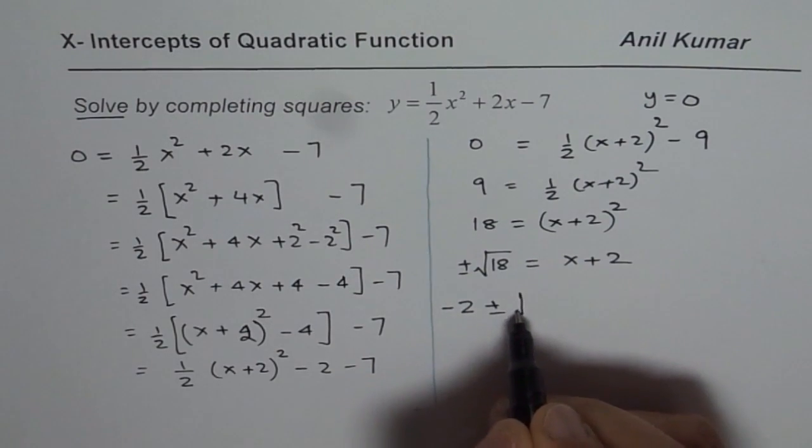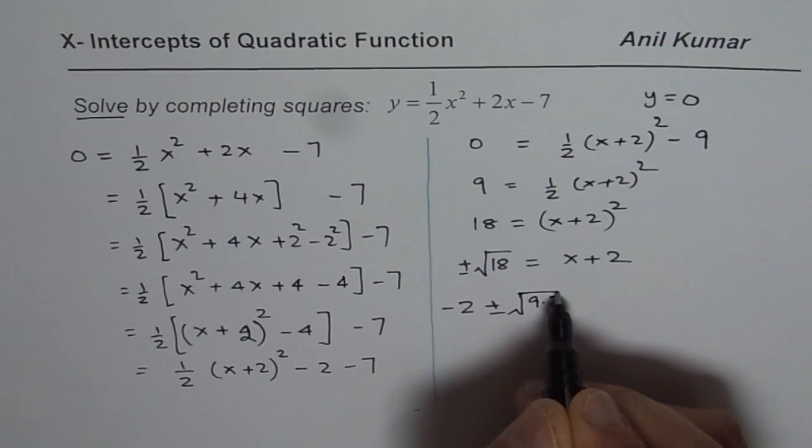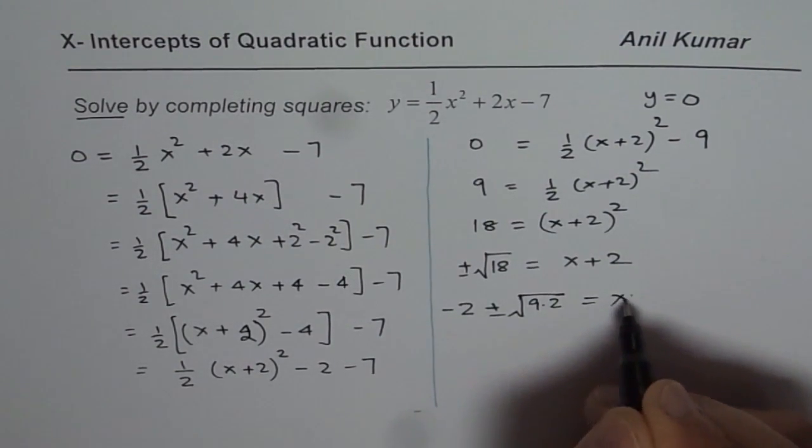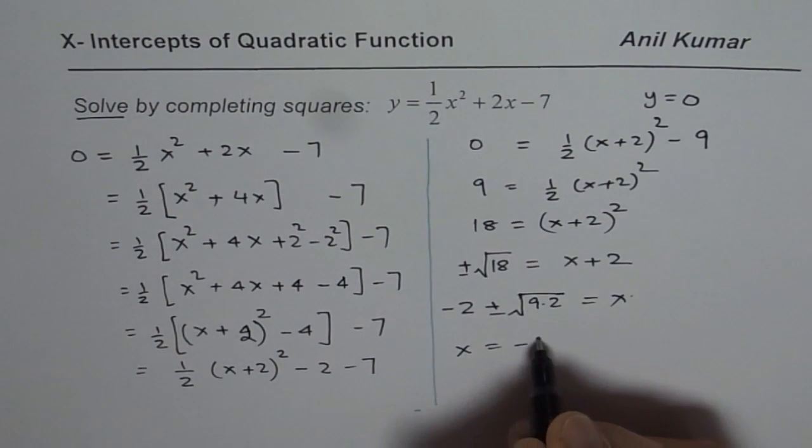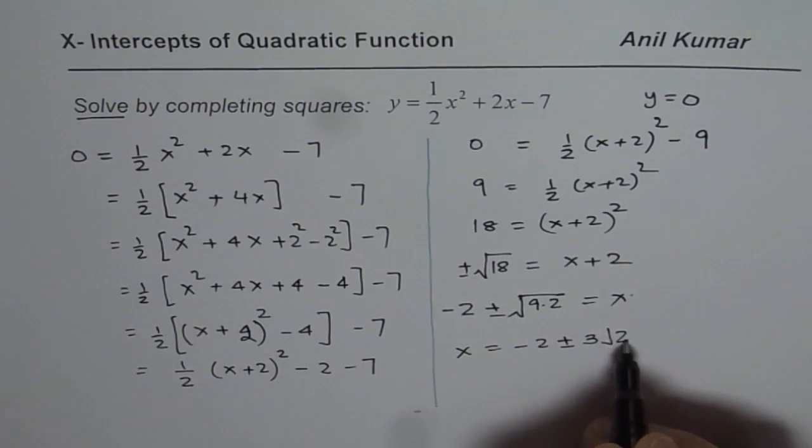18 could be treated as 9 times 2. Let me write here 9 times 2 and then we will simplify this. So we get x equals minus 2 plus minus, square root of 9 is 3, 3 square root 2.